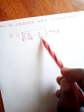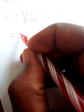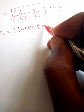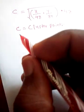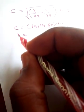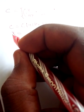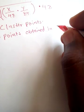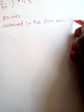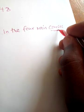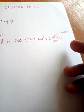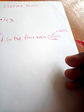C represents cluster points. X represents the points obtained in the four main subjects — the four required subjects in the course you want to pursue.